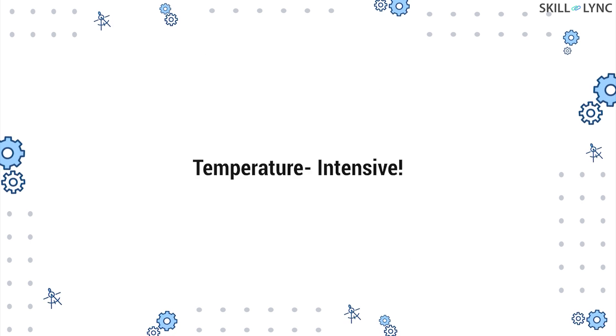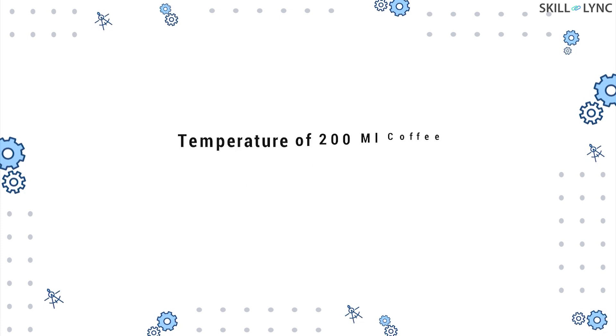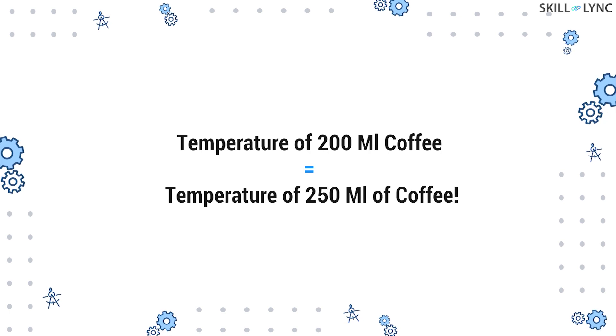Temperature is an intensive quantity, which means that the value of temperature won't change no matter how much quantity you add into the system, provided the new addition also has the same temperature. The temperature of 200 ml of coffee will stay the same if you add another 50 ml of coffee given that the extra quantity also has the same temperature.